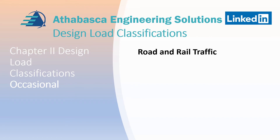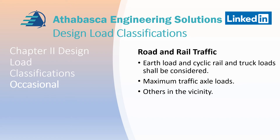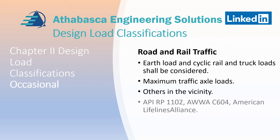The next topic is road and rail traffic. Earth loads and cyclic rail and truck loads shall be considered when pipelines cross underneath roads and rail, and these are considered occasional loads. Maximum traffic axle loads are required, which may require discussions with the client to confirm. Consideration of heavy vehicle loads in the vicinity of the pipeline is also needed. There's a lot of standardized help available — my personal favorite is AWWA C604, but API RP 1102 and the American Lifelines Alliance also have great advice.